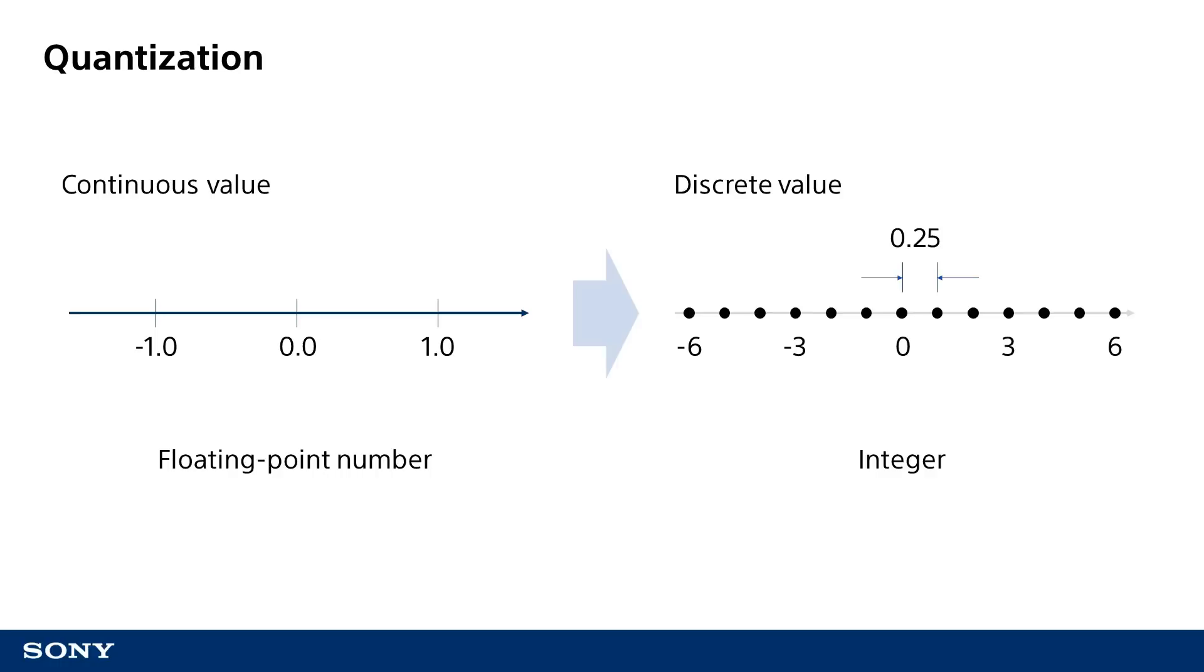Neural network training calculations are normally performed using 16-bit or 32-bit floating-point values. With quantization, we can perform these calculations using integers which are represented with a smaller number of bits.